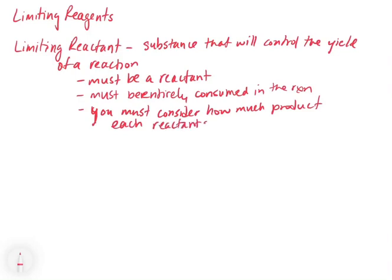What we're going to do is test each reactant to see how much product it makes. The one that makes the least amount of product is going to be the limiting reagent — the one that's entirely used up. The other ones are going to be the excess reagents.